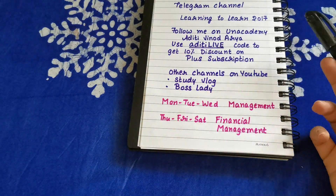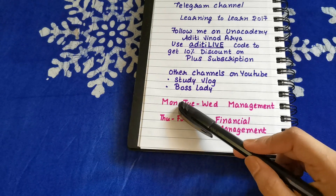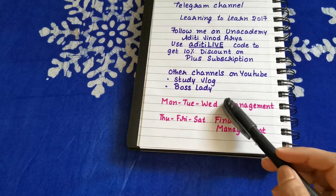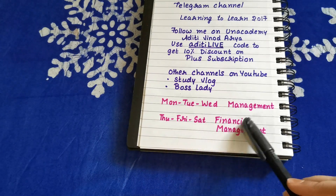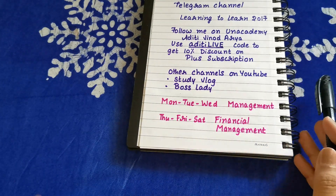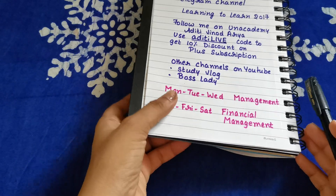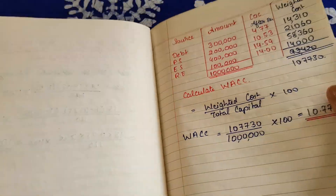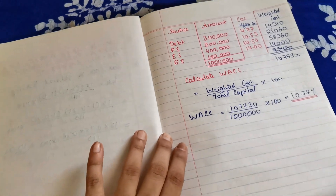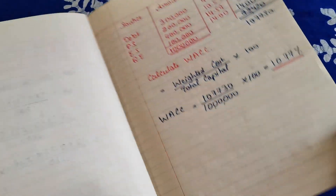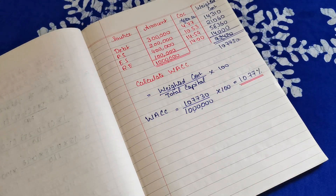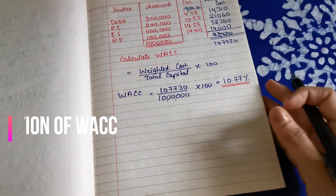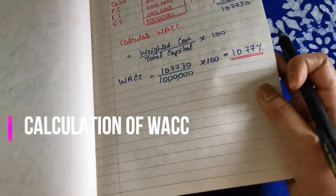I also have two different channels — Try Vlog and Boss Lady. I am currently following this schedule: Monday, Tuesday, Wednesday for management and Thursday, Friday, Saturday for financial management. Today is financial management, so let us try to solve one particular question on weighted average cost of capital. Before starting, let us write the question.